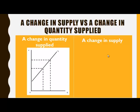Now we want to compare a change in supply to a change in the quantity supplied. A change in quantity supplied is illustrated by a movement along the supply curve. It is caused by a change in price, and due to that change in price, there is a movement along the supply curve, which results in an increase in the quantity supplied.